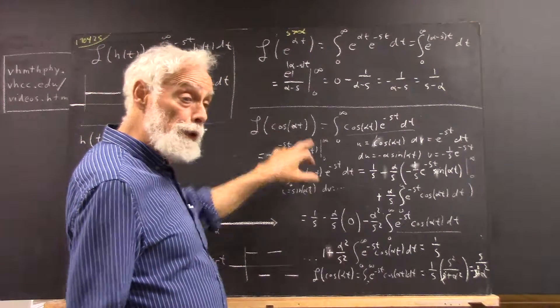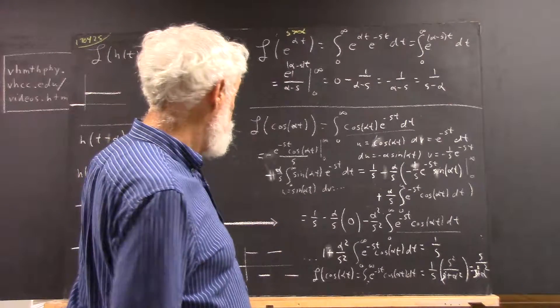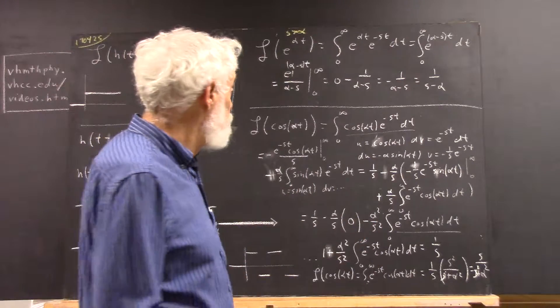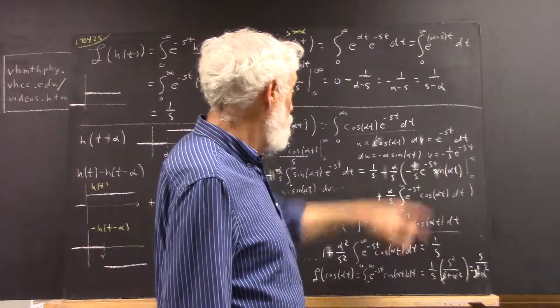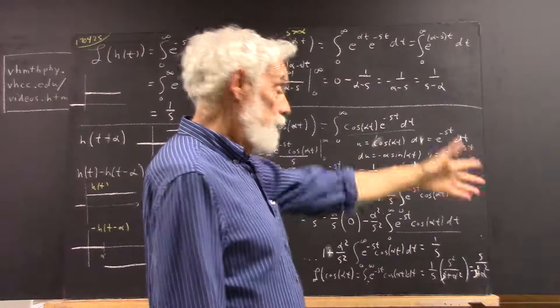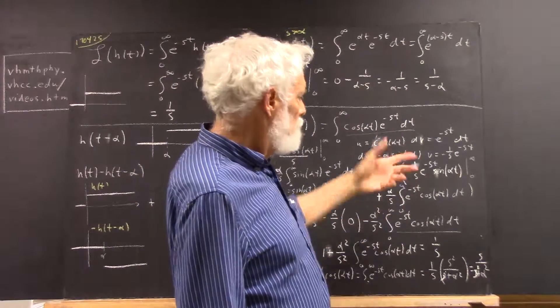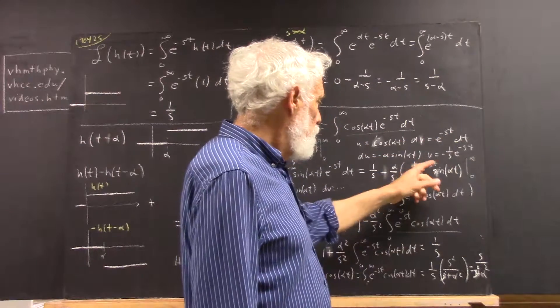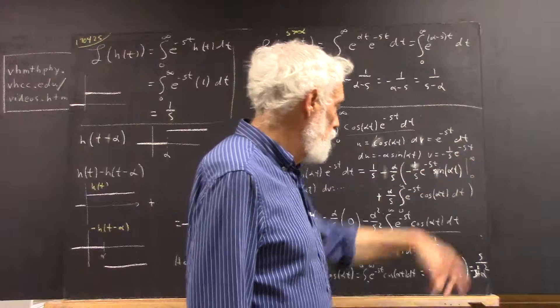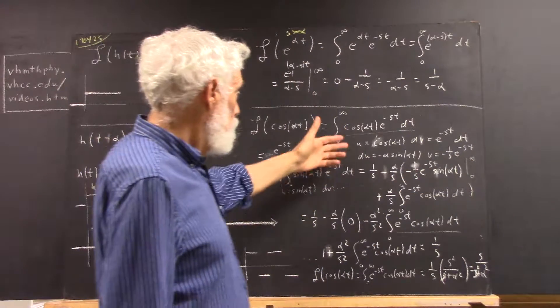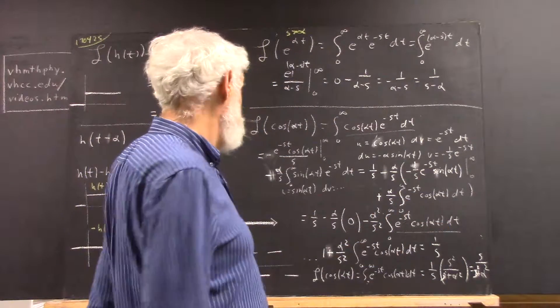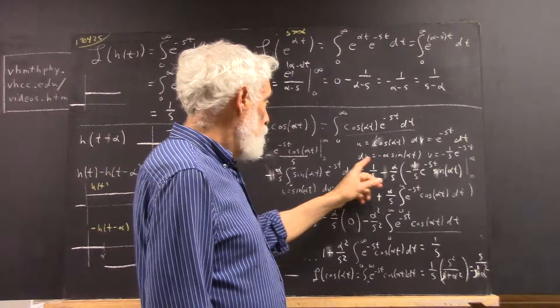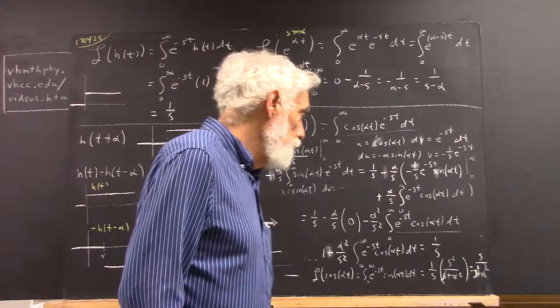Okay. Laplace Transform of cosine of alpha t. Well, we just do the integral. It's a reasonably straightforward first-year calculus integral. Cosine of alpha t, e to the negative s t dt. We do an integration by parts. We're generally going to let dv equal e to the negative s t dt, so that v is negative one over s e to the negative s t. And then we're going to let u be whatever function we're doing the transform of. So, in this case, cosine of alpha t. So, the du is negative alpha sine of alpha t.